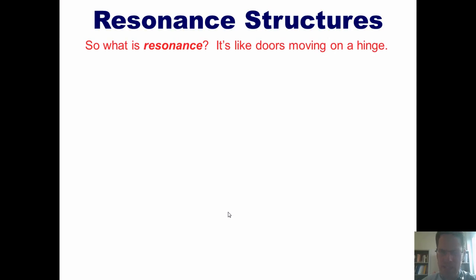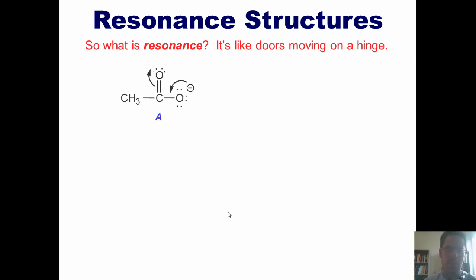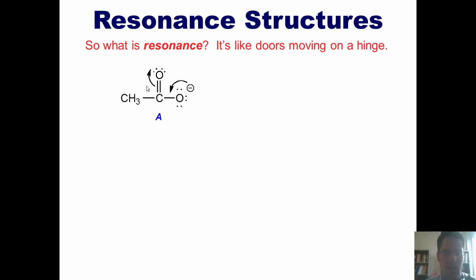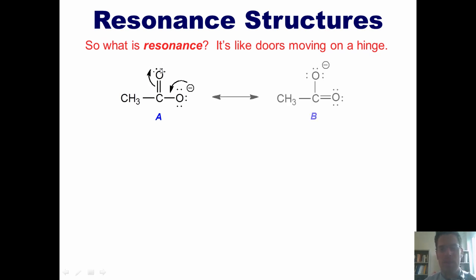So what is resonance? Actually, resonance is kind of like doors moving on a hinge. This molecule right here is called acetate. Now as you'll note in this Lewis structure, the oxygen shown here to the right has a negative charge. If you can imagine this negative charge — which really just represents two electrons — coming down and closing here to form an oxygen-carbon double bond, and in the process pushing these two pi electrons up onto this other oxygen, it will actually form this molecule B.